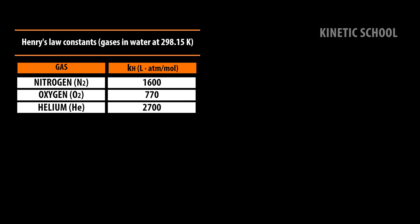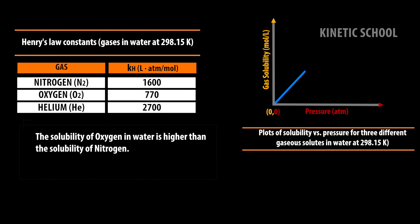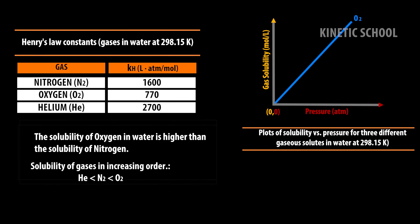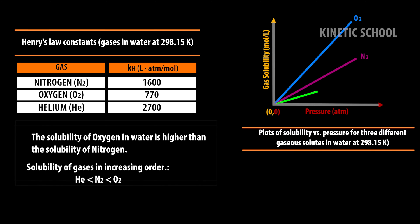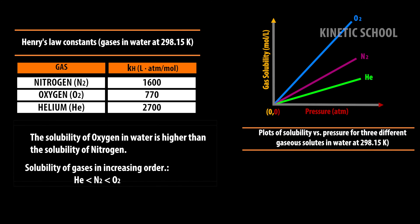Henry's law constant of three gases in water at 298.15 Kelvin is given below. Herein we see that as the oxygen has lower value of KH compared to nitrogen and helium at given temperature, so it is more soluble than nitrogen and helium.